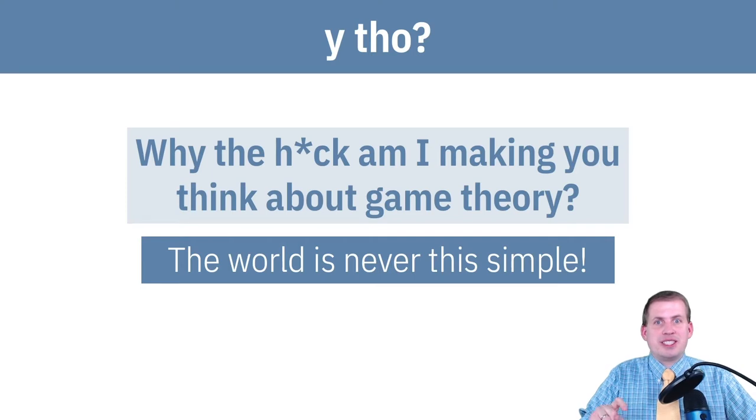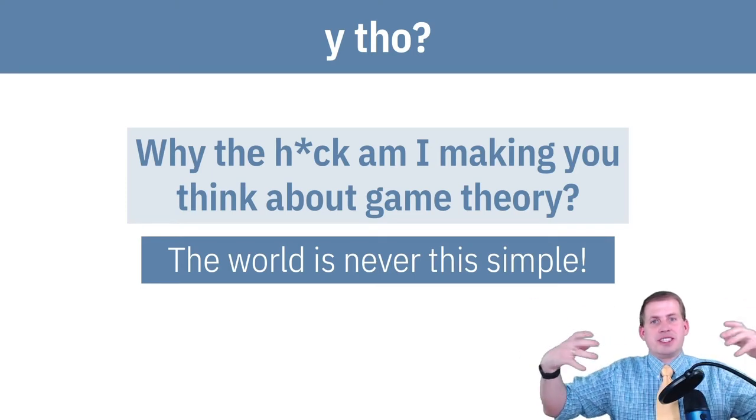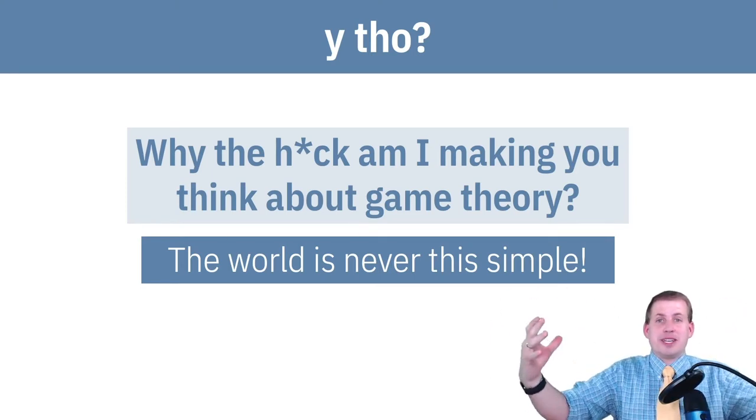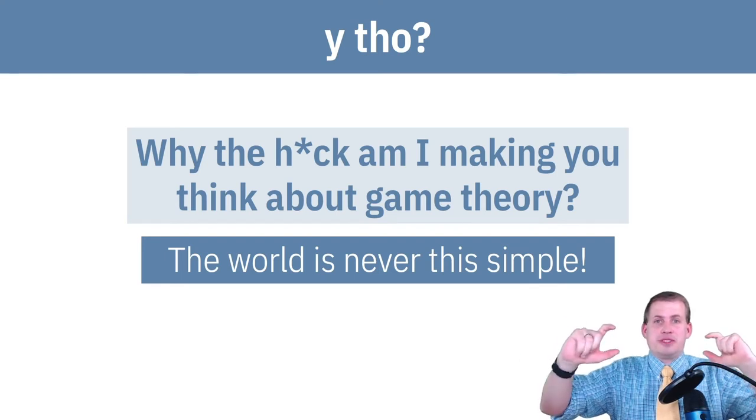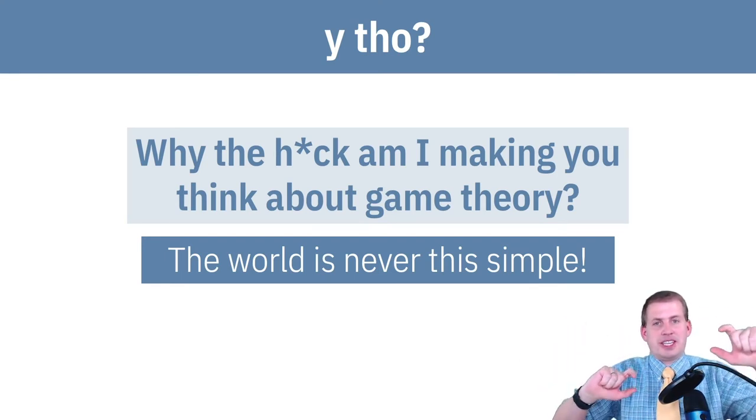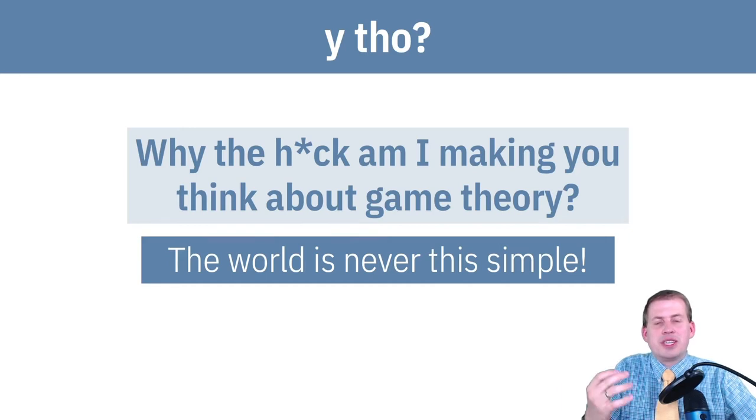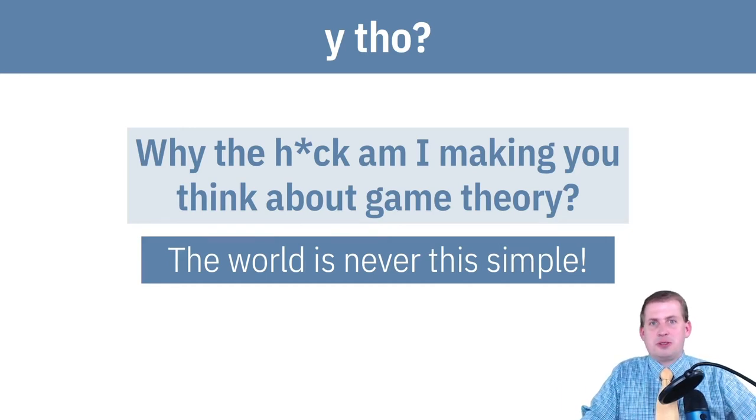And once you get into that kind of dimensionality with just hundreds of different possible actors, it gets really impossible to figure out the different payoffs and the game strategies and stuff. And it's just like, you can't do it. And so we're stuck in this world of these two by two matrices. And so why?